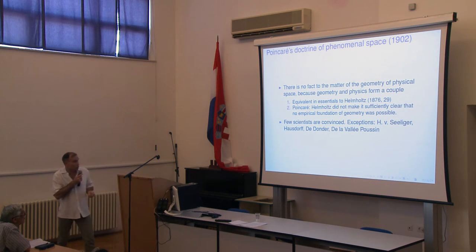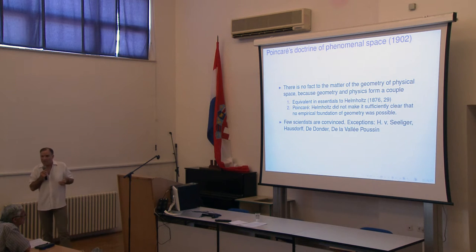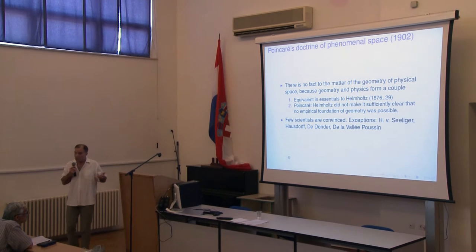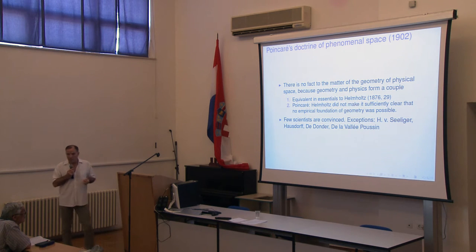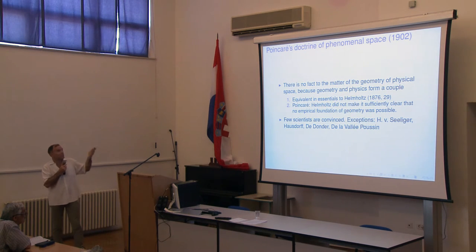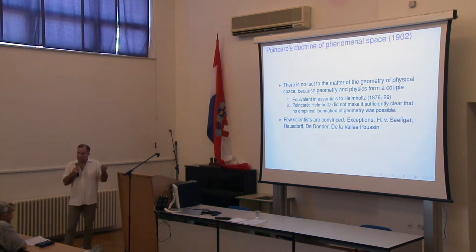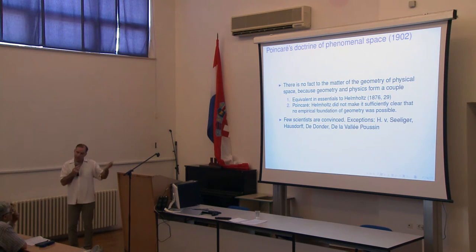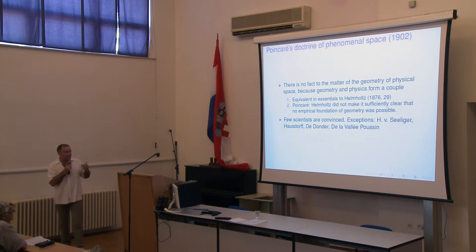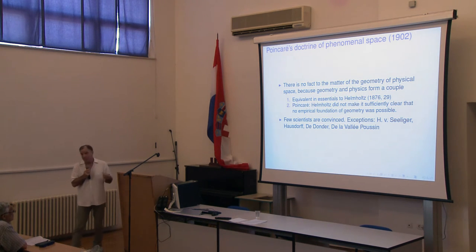He moved from geometry to argue that geometry is an abstract science, and yet we talk about the geometry of phenomenal space as if we knew what it was. Poincaré had a different take: his position was that there is no fact to the matter of the geometry of physical space because geometry and physics form a couple. Helmholtz had essentially said the same thing as early as 1876, but Poincaré pointed out that Helmholtz did not make it sufficiently clear that there is no empirical foundation of geometry. You have to assign some physical process to a geometrical object like a straight line — such as the axis of rotation of a rotating body or the propagation direction of a light wave — and that assignment is always going to be our choice, a stipulation.